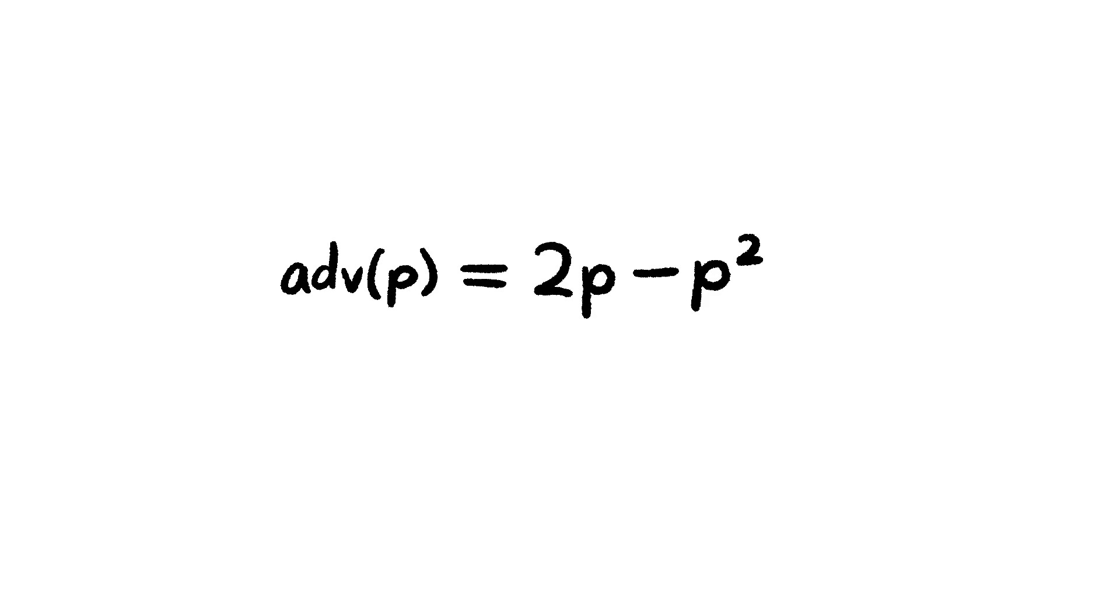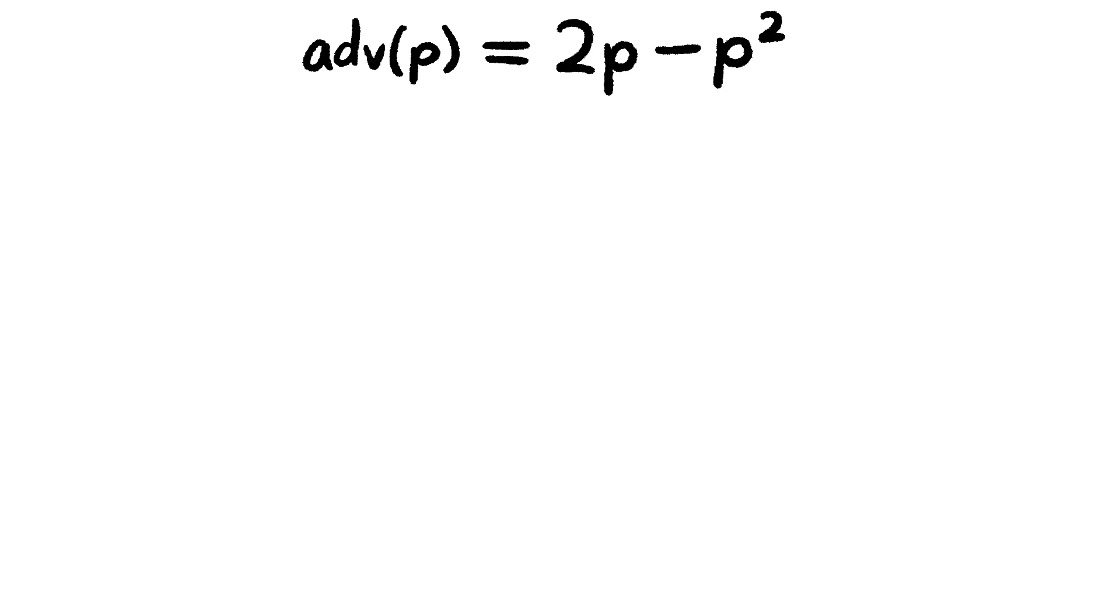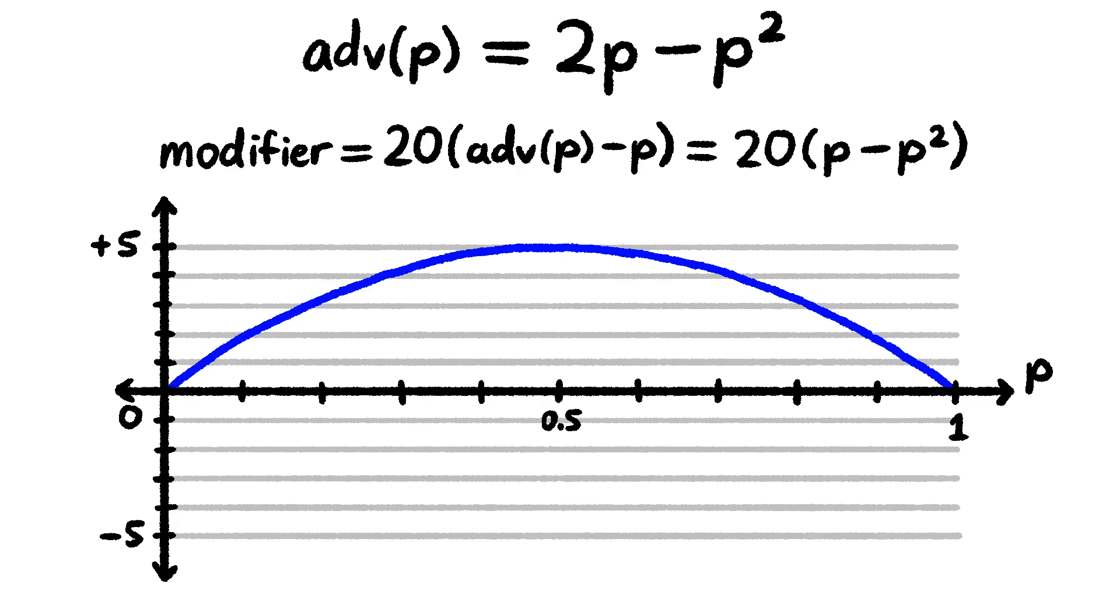Now we want to convert these to modifiers. What bonus do I need in order to get from a success probability of P to this new value? Since we're using 20 sided dice, we just need to take the difference and multiply by 20. If we now graph the modifier against the probability P, we get this graph for Advantage and this one for Disadvantage. So it looks like Advantage is most powerful when the original probability is 50%, where it corresponds to a modifier of plus 5 for Advantage or minus 5 for Disadvantage.